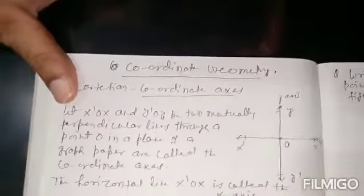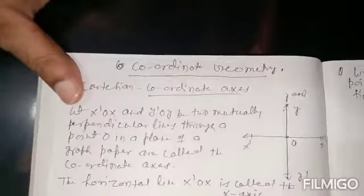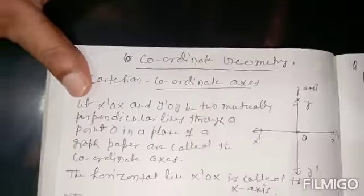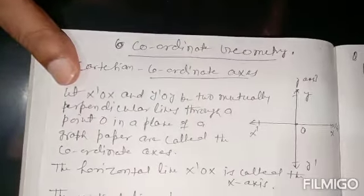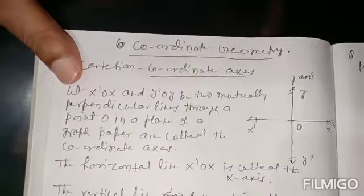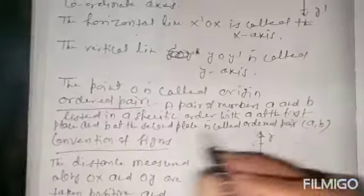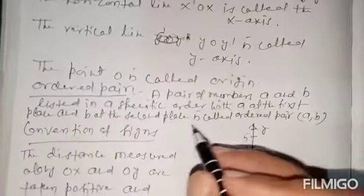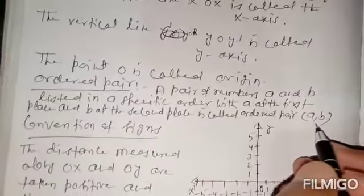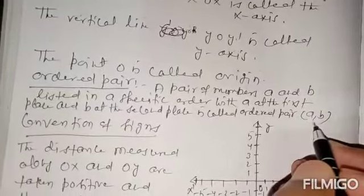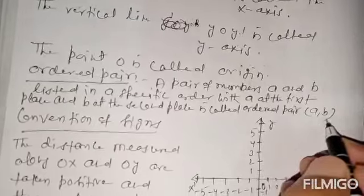Now, ordered pair. A pair of numbers A and B, listed in a specific order, with A at the first place and B at the second place, is called an ordered pair and it is written as (A, B).